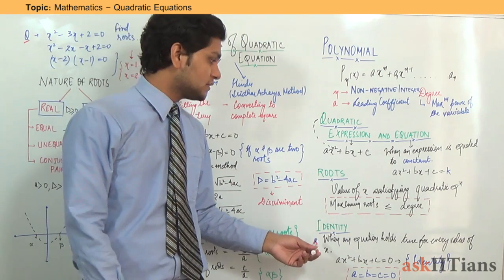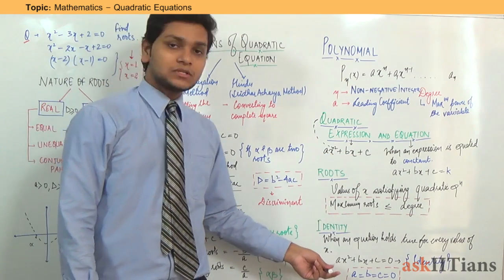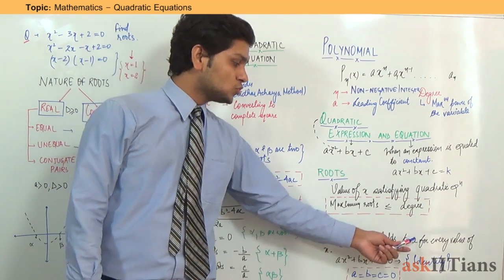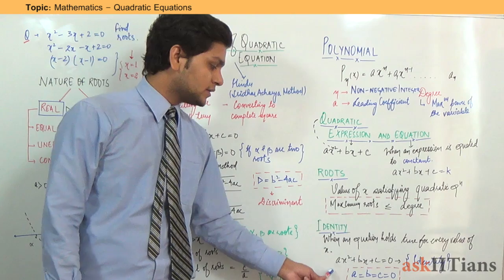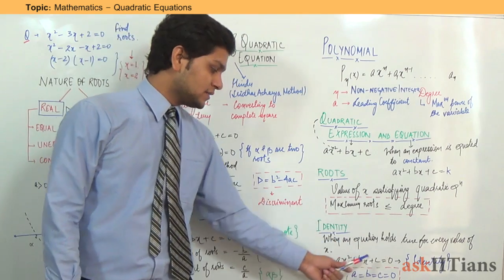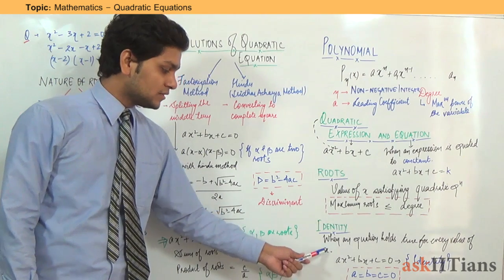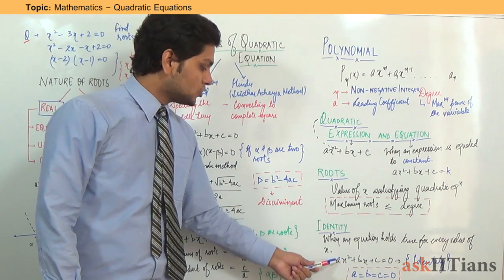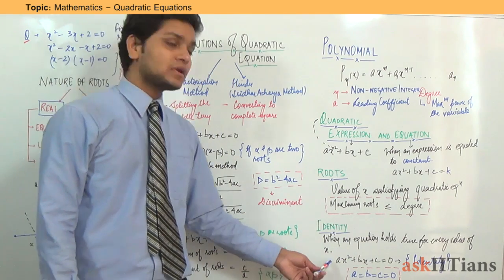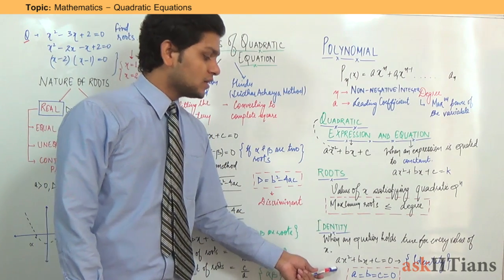Now there is another term used frequently: identity. What do we mean by identity? When you have a quadratic equation, the maximum roots it can have are 2. But if this equation holds true for every value of x, it is called an identity. Suppose you have ax² + bx + c = 0. If this is an identity, then a = b = c = 0. A quadratic equation that is true for every value of x we are considering in the real numbers becomes an identity.